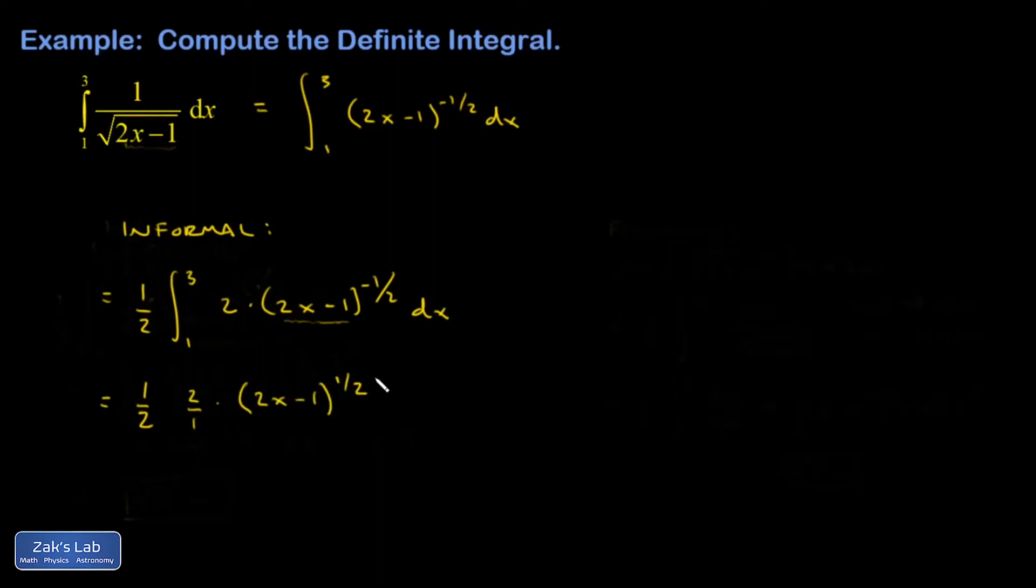All right, so that might seem a little odd if you're not used to doing it that way, but as long as you're checking your answer and getting the integrand that you started with when you differentiate this answer, then it's legitimate. And that sort of guess and check process actually gets you feeling more intuitive about how the chain rule works forward and backward.